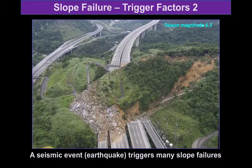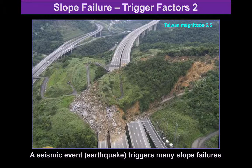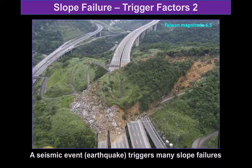Seismic events can trigger mass movements. If we have a slope that's already a little unstable, shaking that slope can again reduce the cohesion and a mass movement will occur. This particular mass movement occurred in Taiwan after a 6.5 magnitude earthquake.